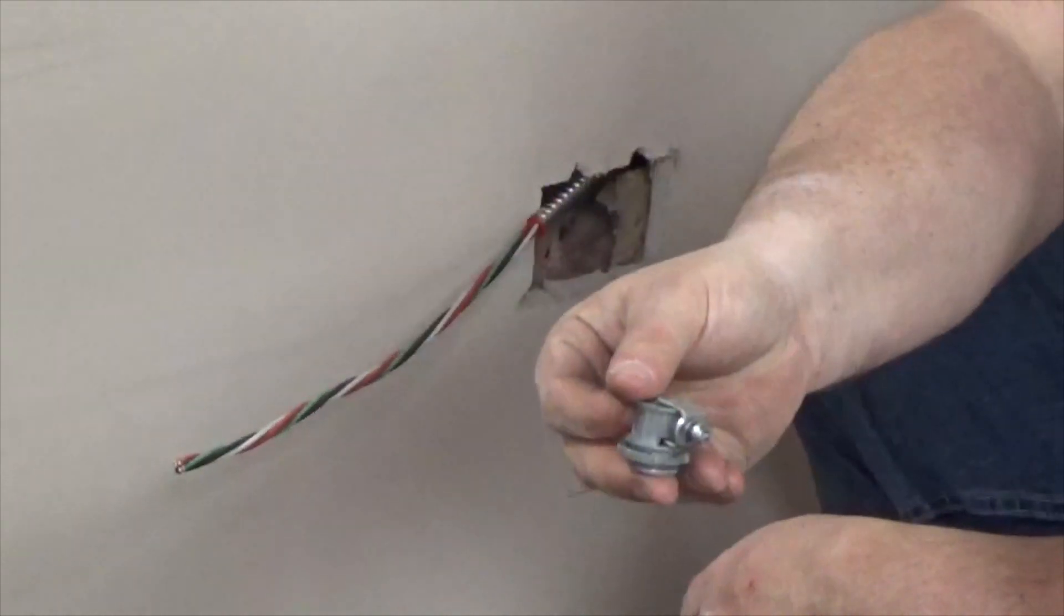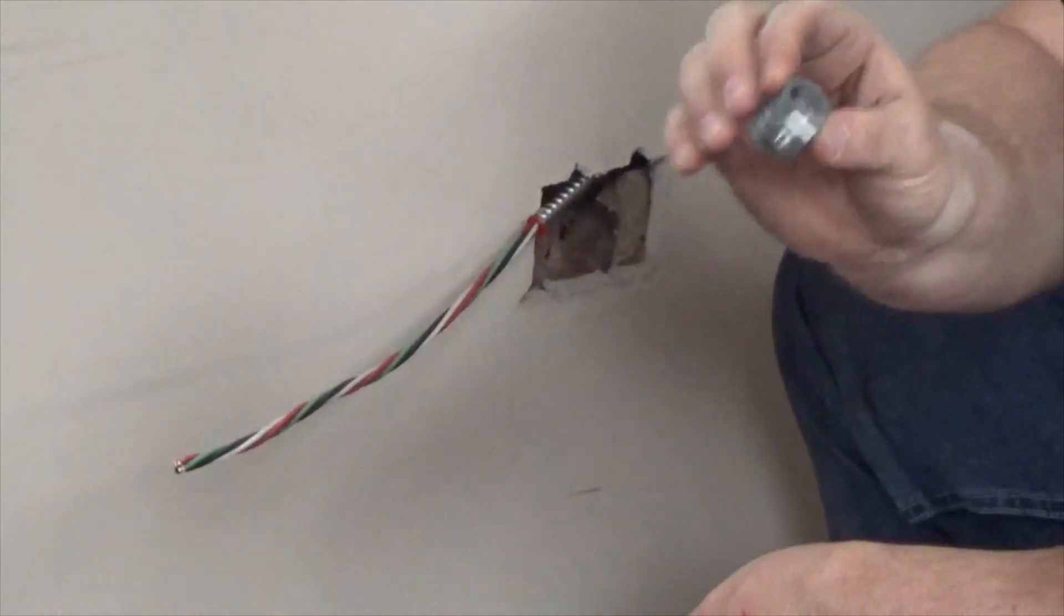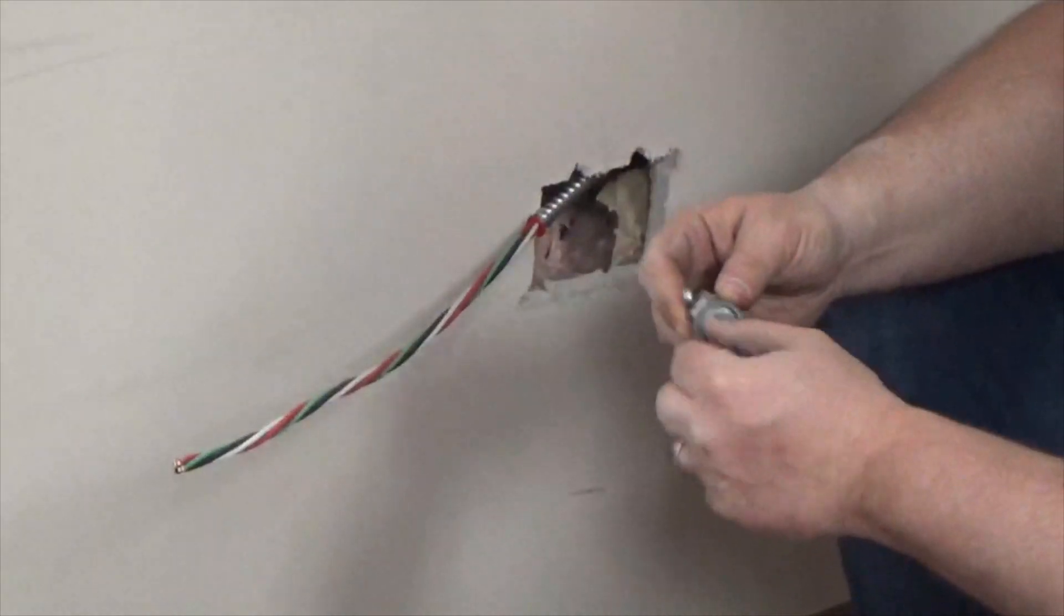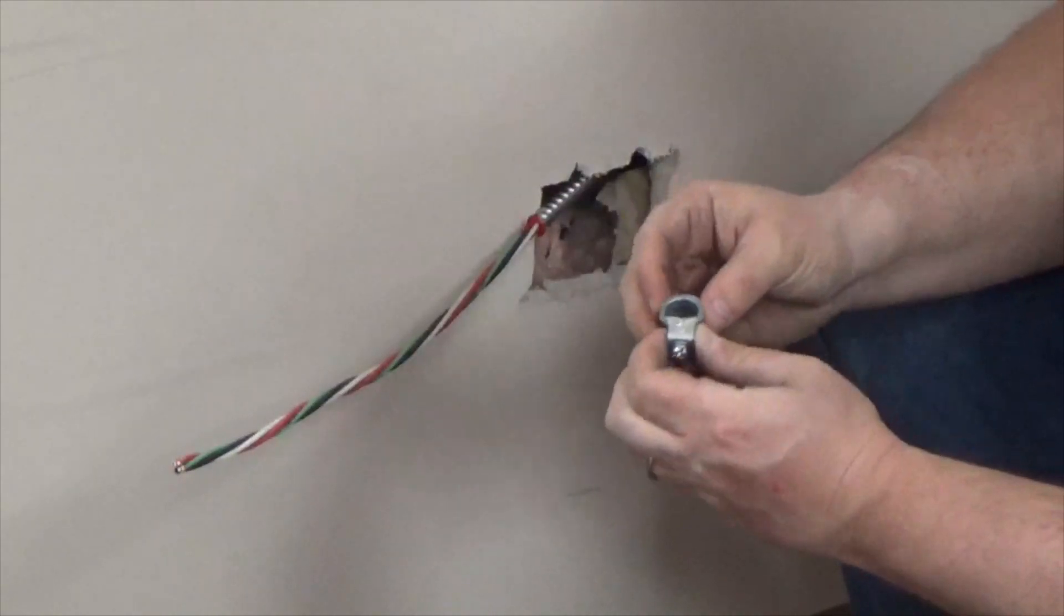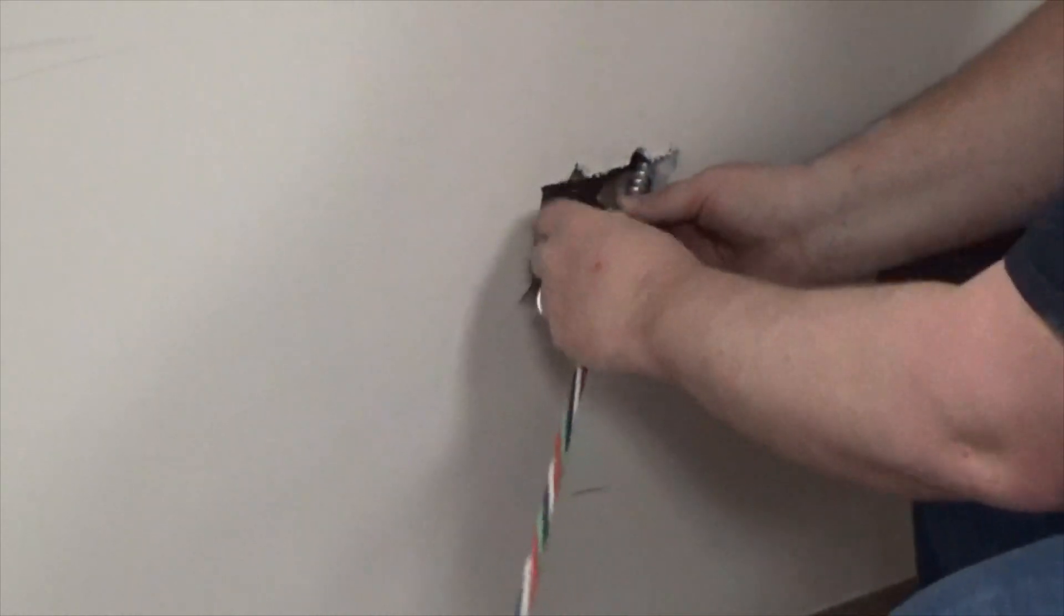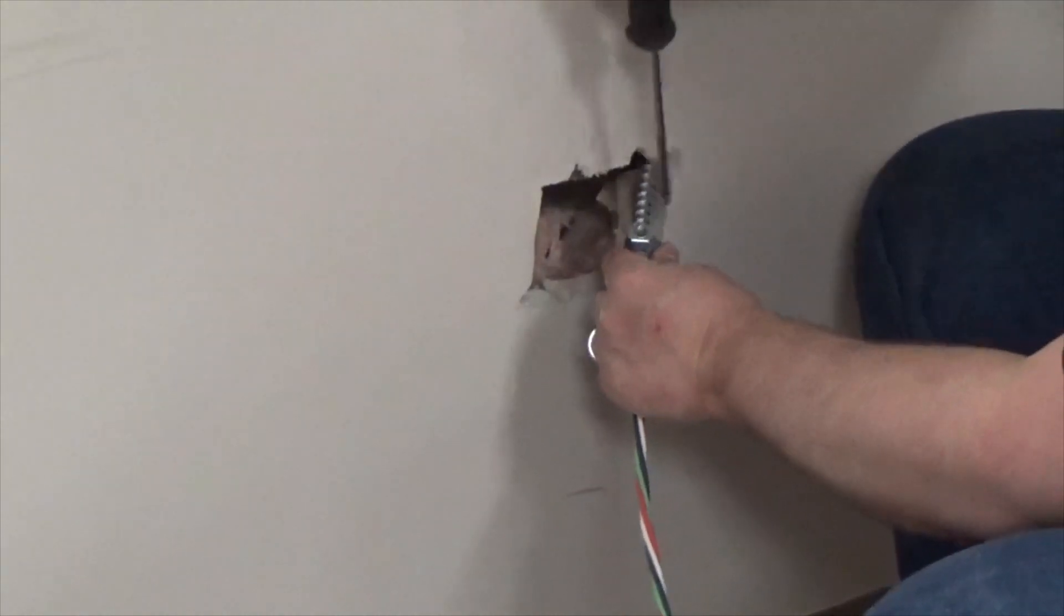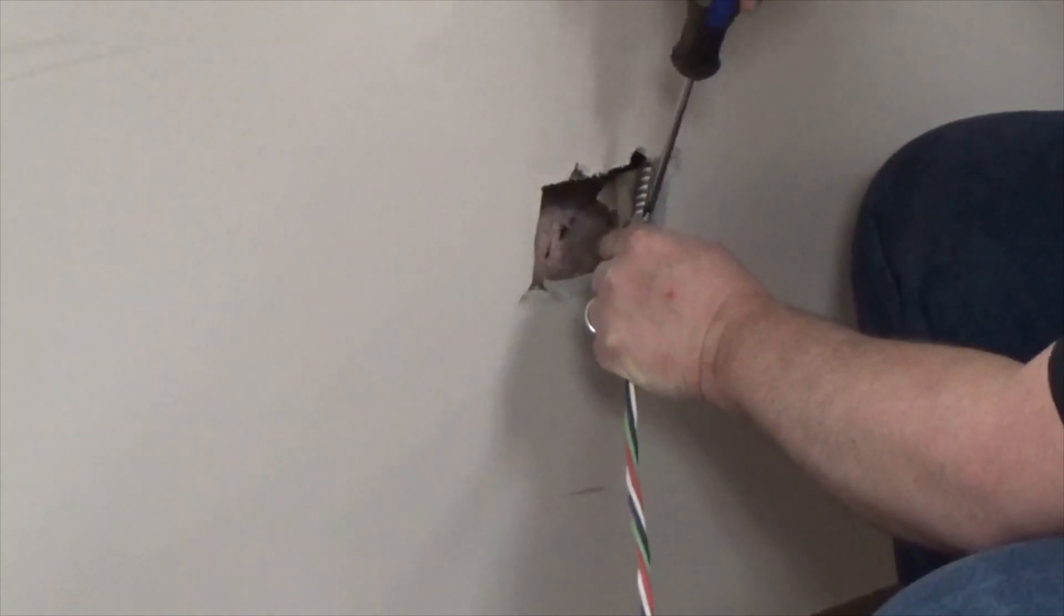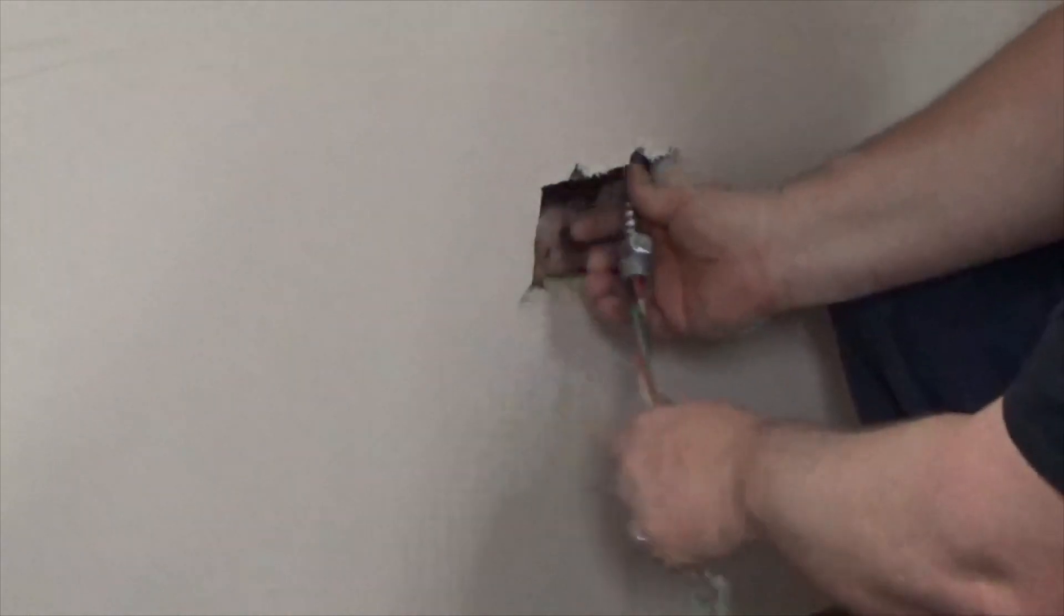So, I have a single MC connector. You want to make sure it's an MC connector, not a Romex connector. Make sure you look at the packaging and make sure that you understand exactly what type of connector you're using for what wire you're using. We're going to remove the lock nut. We're going to loosen up here, slide it in, and then we're going to tighten it down. I'm going to make sure it doesn't come off.